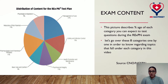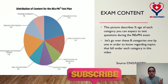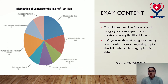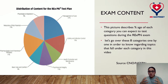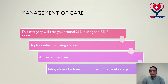The first slide belongs to exam content. The exam content for the REX-PN exam is divided into eight different categories. These categories are: Management of Care, Safety and Infection Control, Health Promotion and Maintenance, Psychosocial Integrity, Basic Care and Comfort, Pharmacology and Parenteral Therapies, Reduction of Risk Potentials, and Physiological Adaptation. The picture describes the percentage of each category you can expect to be tested on during your REX-PN exam. Let's go over all eight categories one by one.